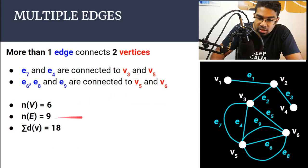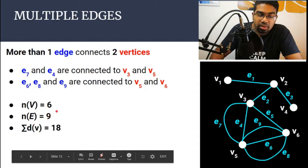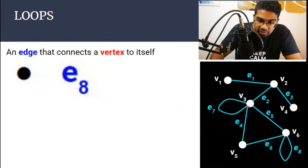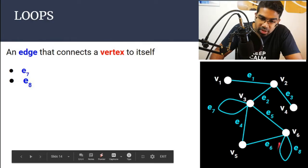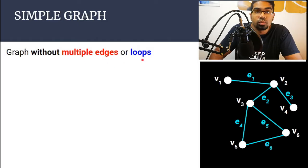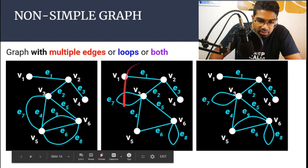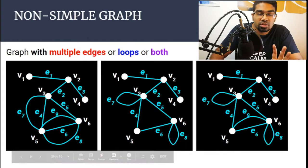We have six vertices and now nine edges, so the total sum of degrees is 18 — nine edges multiplied by two. Now let's look at loops. Loops are an edge that connects a vertex to itself. E7 starts from V3 and goes back to V3 — this is a loop. E8 starts at V6 and goes back to V6. So a simple graph is a graph without multiple edges or loops. When there are no multiple edges or loops, it is a simple graph. When there are multiple edges, loops, or both, it is not a simple graph.